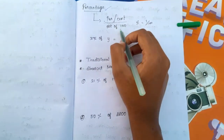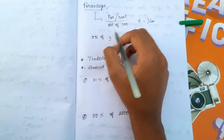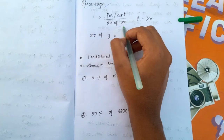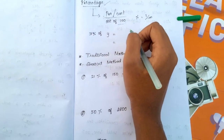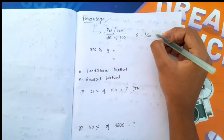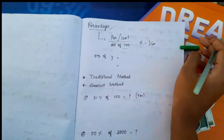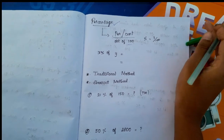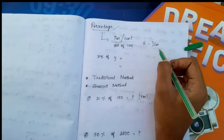The meaning of percentage is out of 100. Out of 100. We have a percent sign.